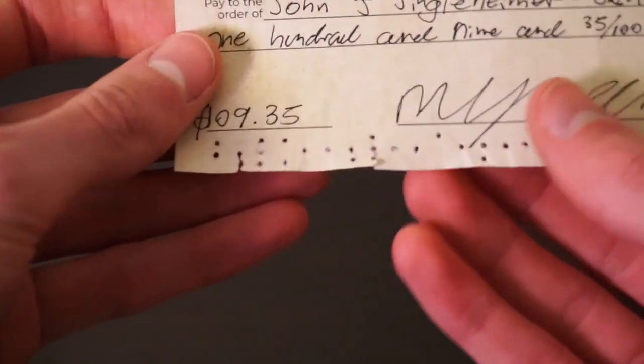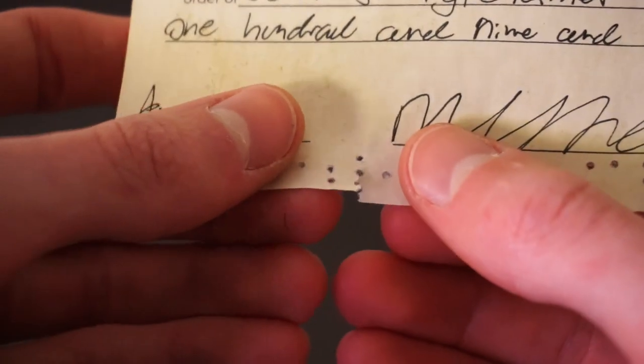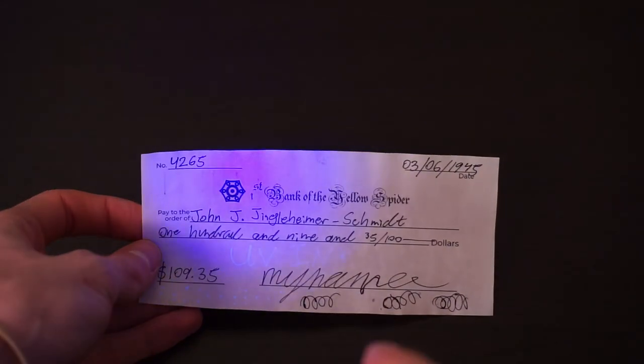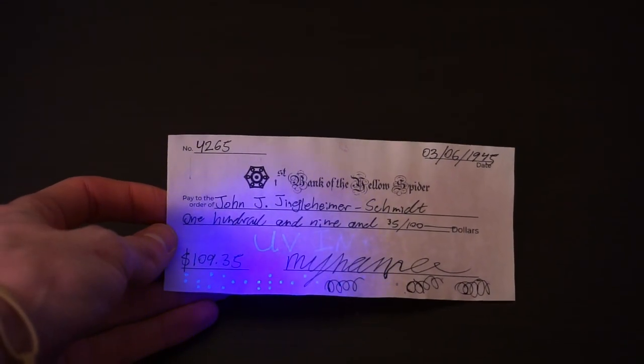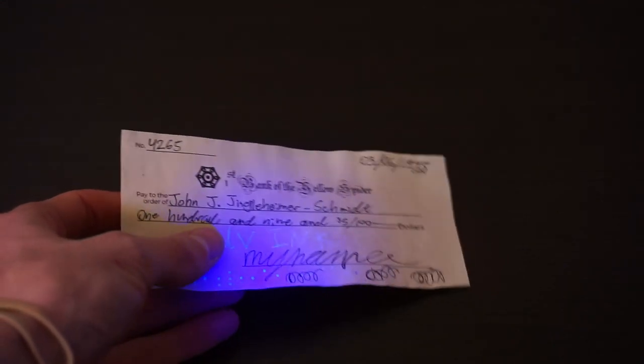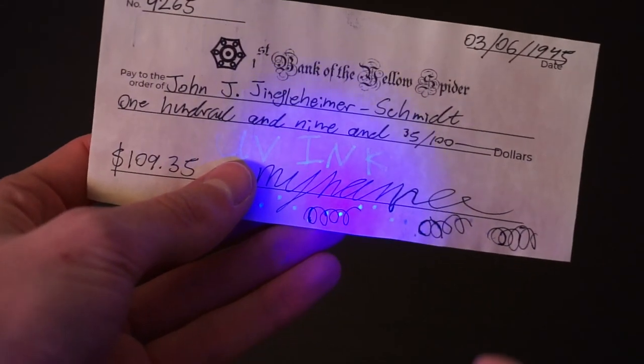SRI first experimented with encoding account information using punched holes, which were deemed to be too fragile. Then, UV fluorescent ink, which had the advantage of being invisible to the end user, but this proved to be a double-edged sword. The ink was easily obscured by stray marks and stamps.